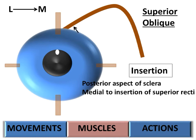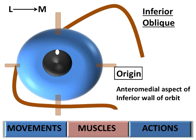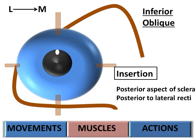The inferior oblique originates from the anteromedial aspect of the inferior wall of the orbit and gets inserted into the posterior aspect of the sclera just posterior to the lateral rectus.